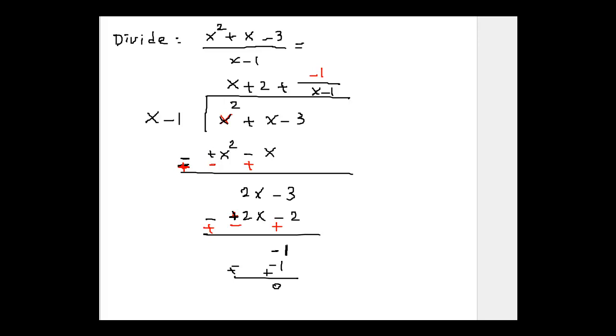So this whole thing would be x plus 2 plus minus 1 over x minus 1. So when you see a fraction, that probably means you have a remainder here, negative 1.